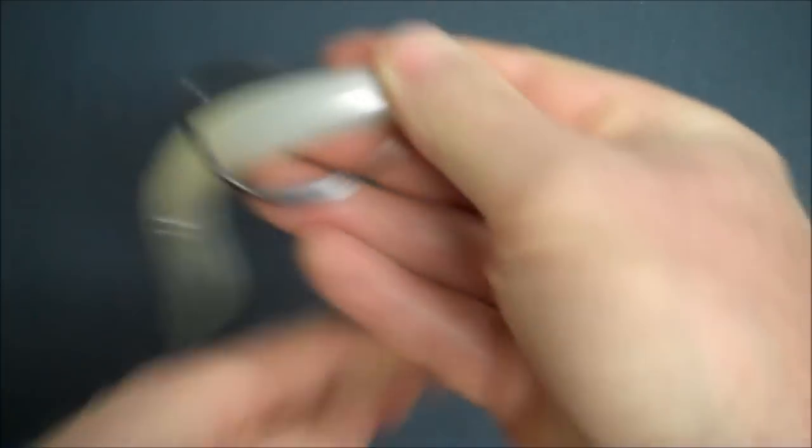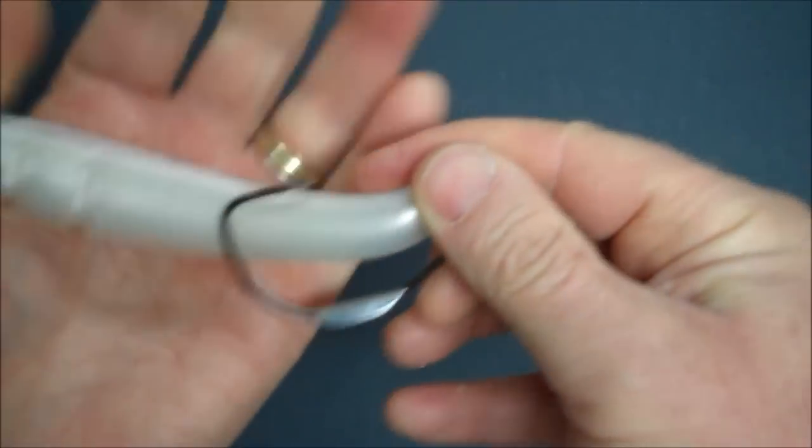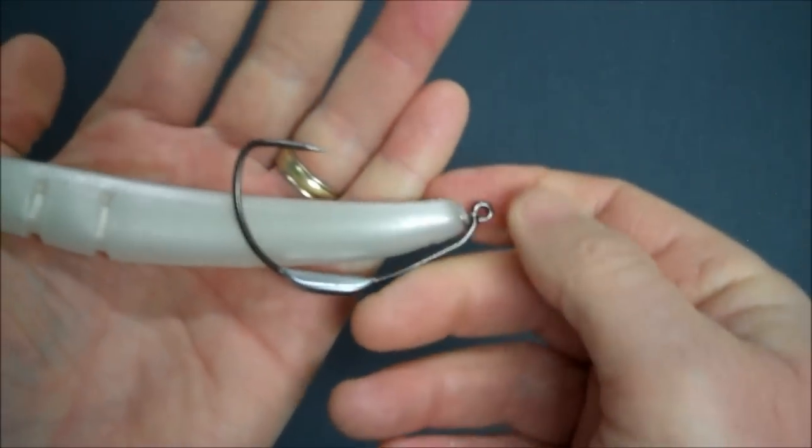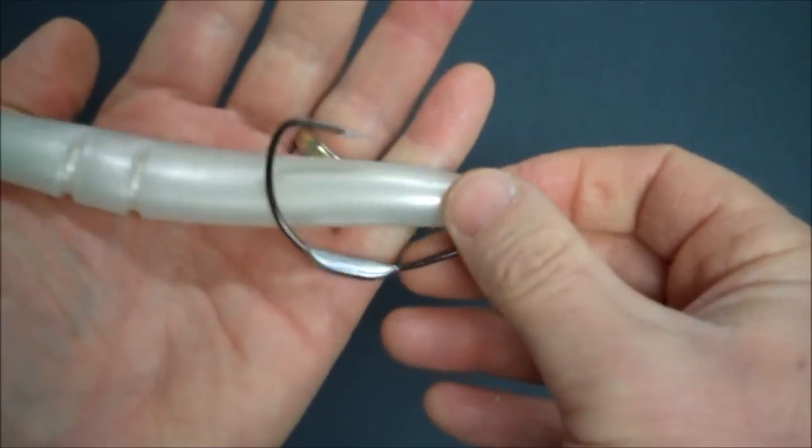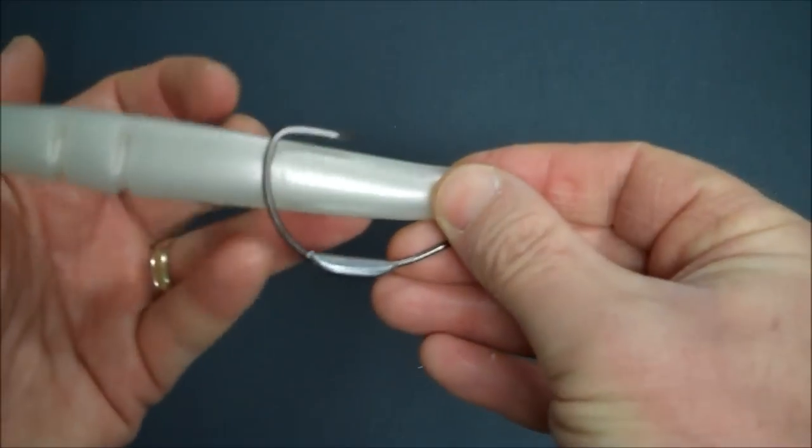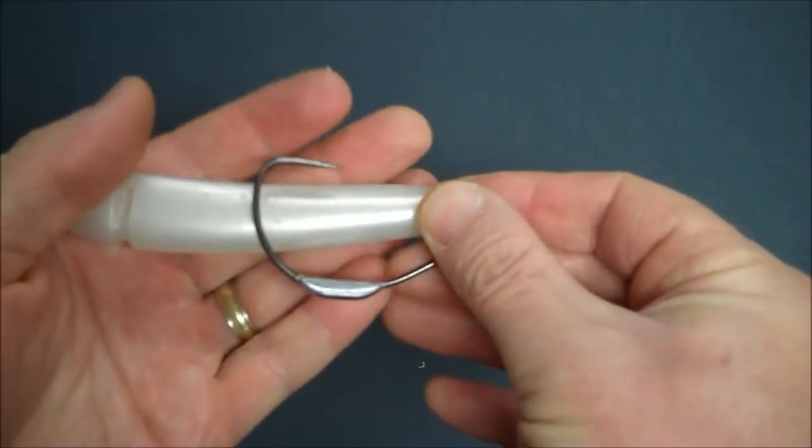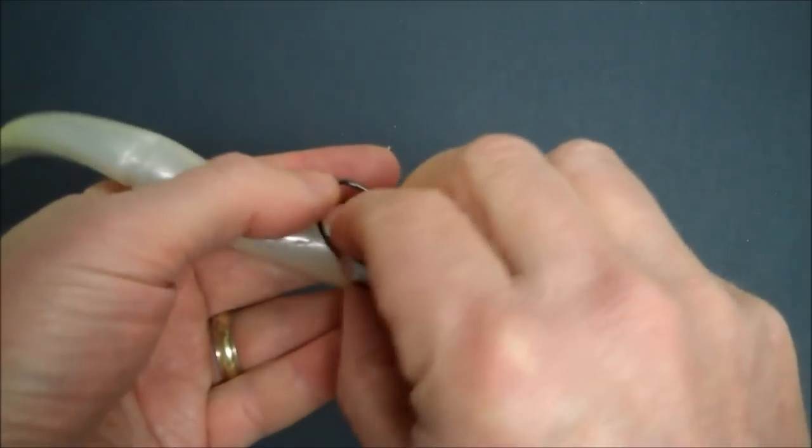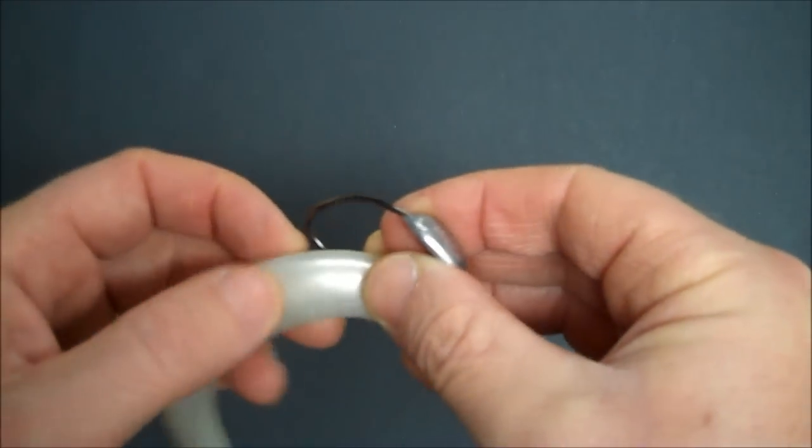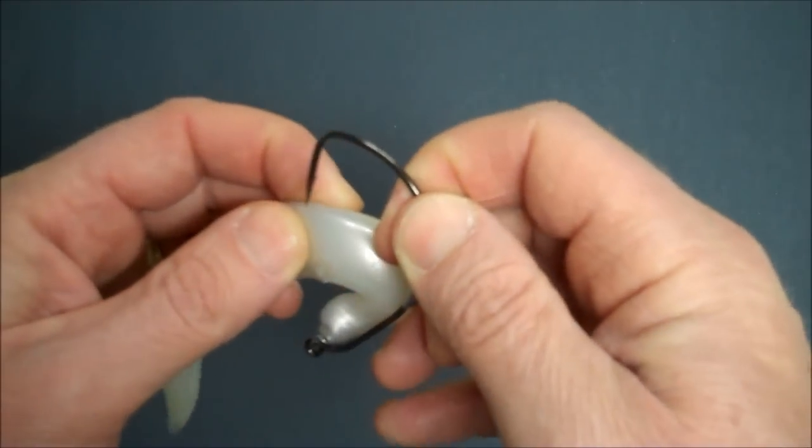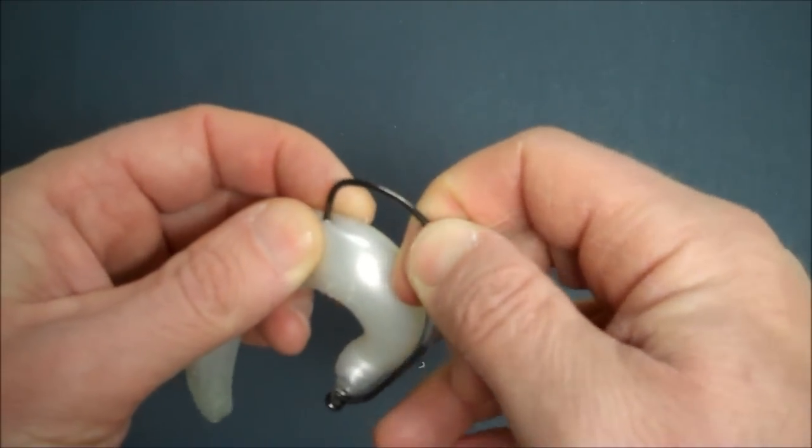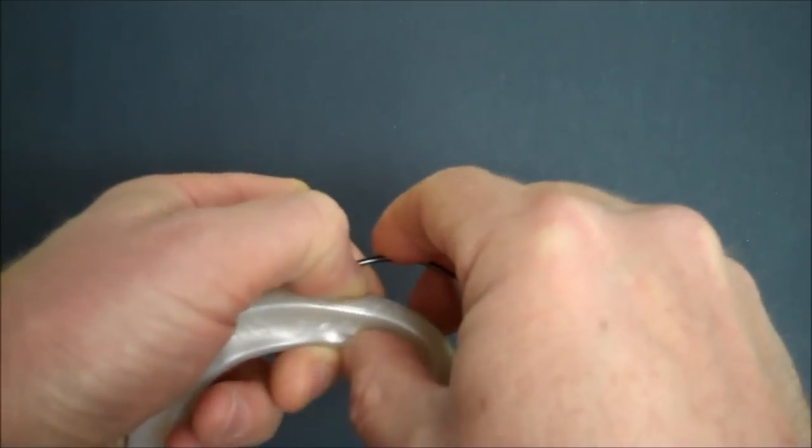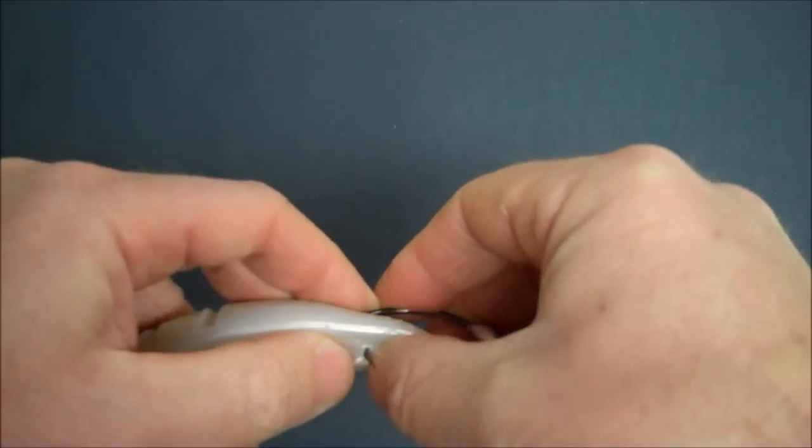Okay. Now we can just lay the bait flat. And what I'm looking for here is where does the hook, when it's laying flat, where does the hook intersect the bait? And it's about here. So now I'll take it, flip it over, bend it back, then insert the hook, come out the top.